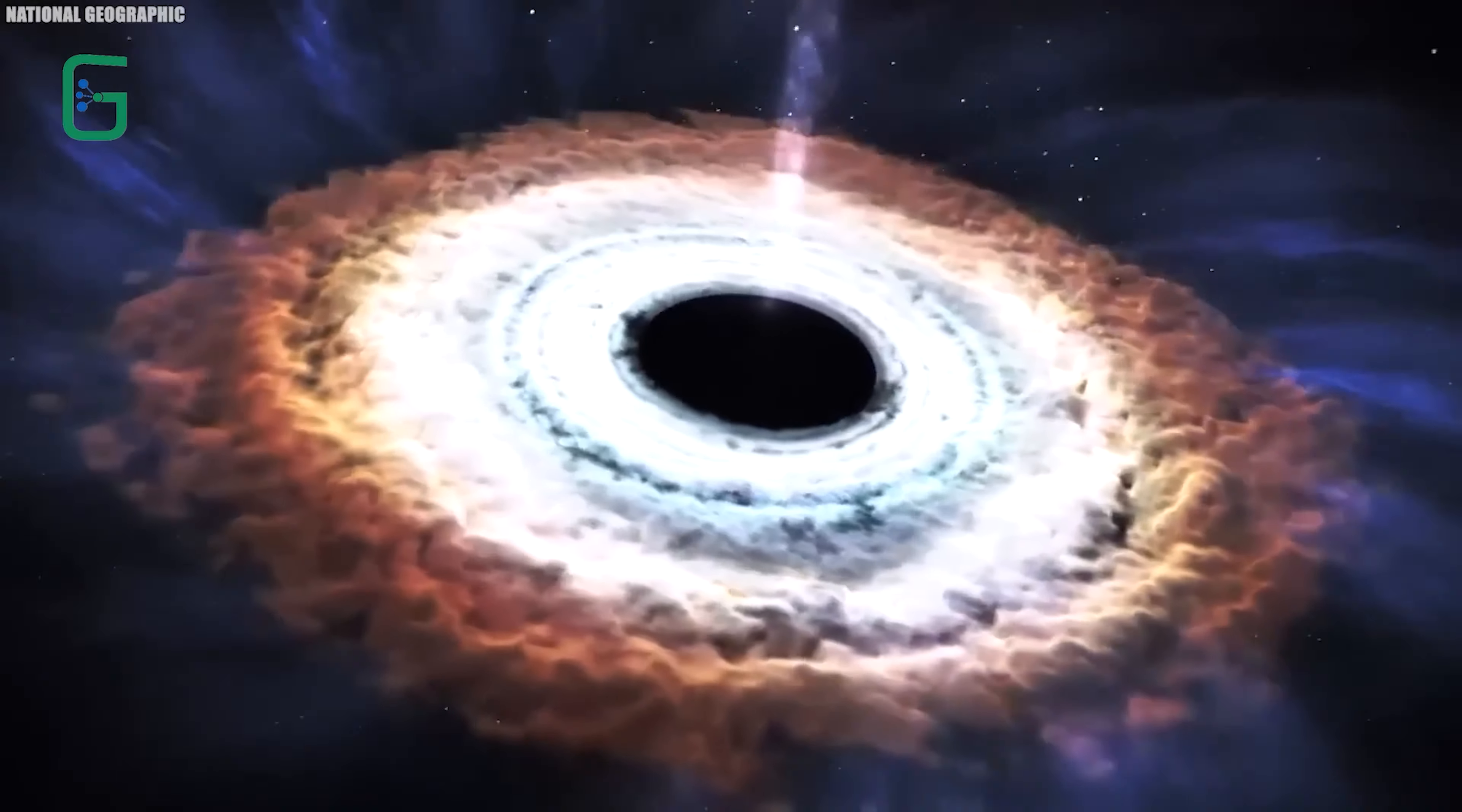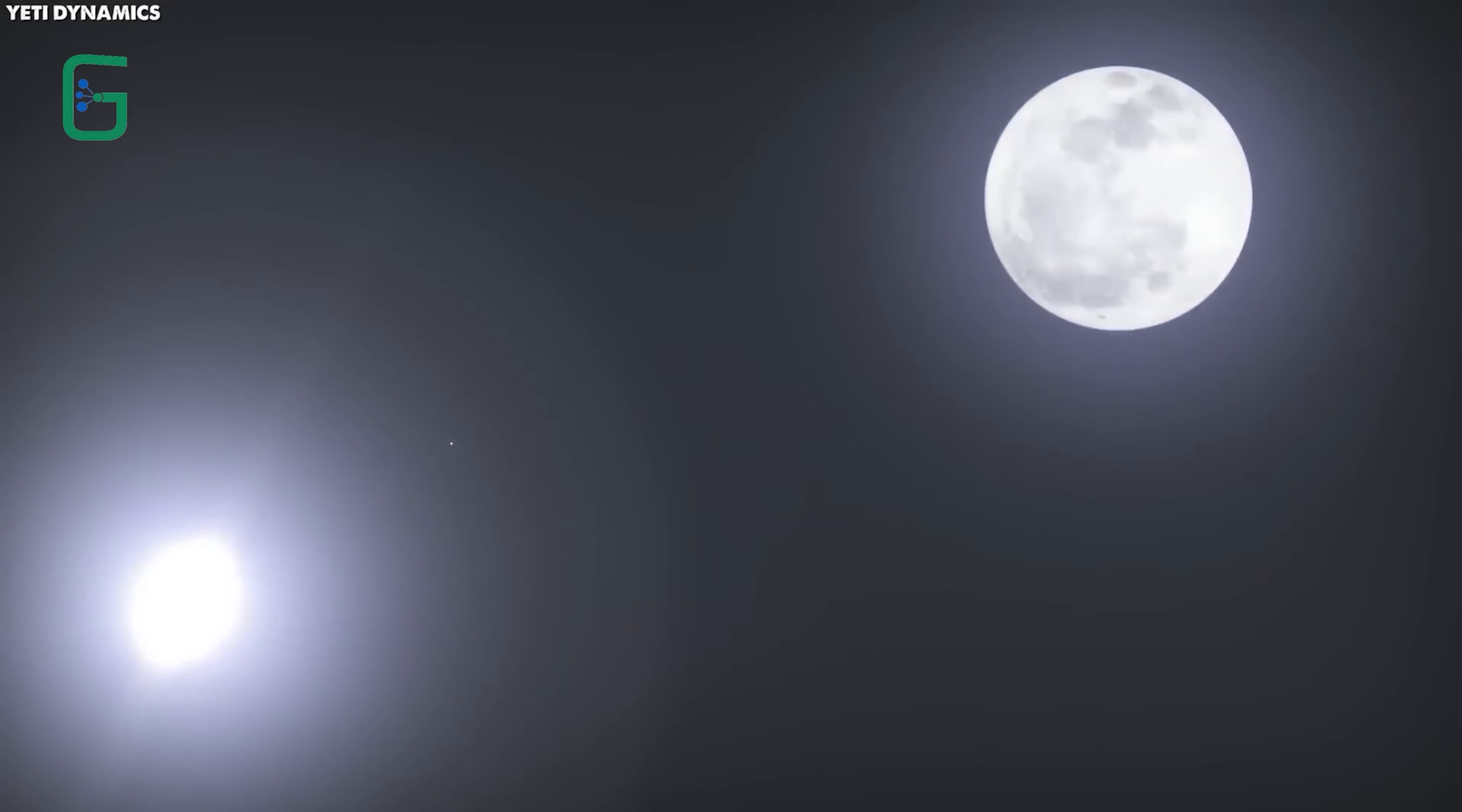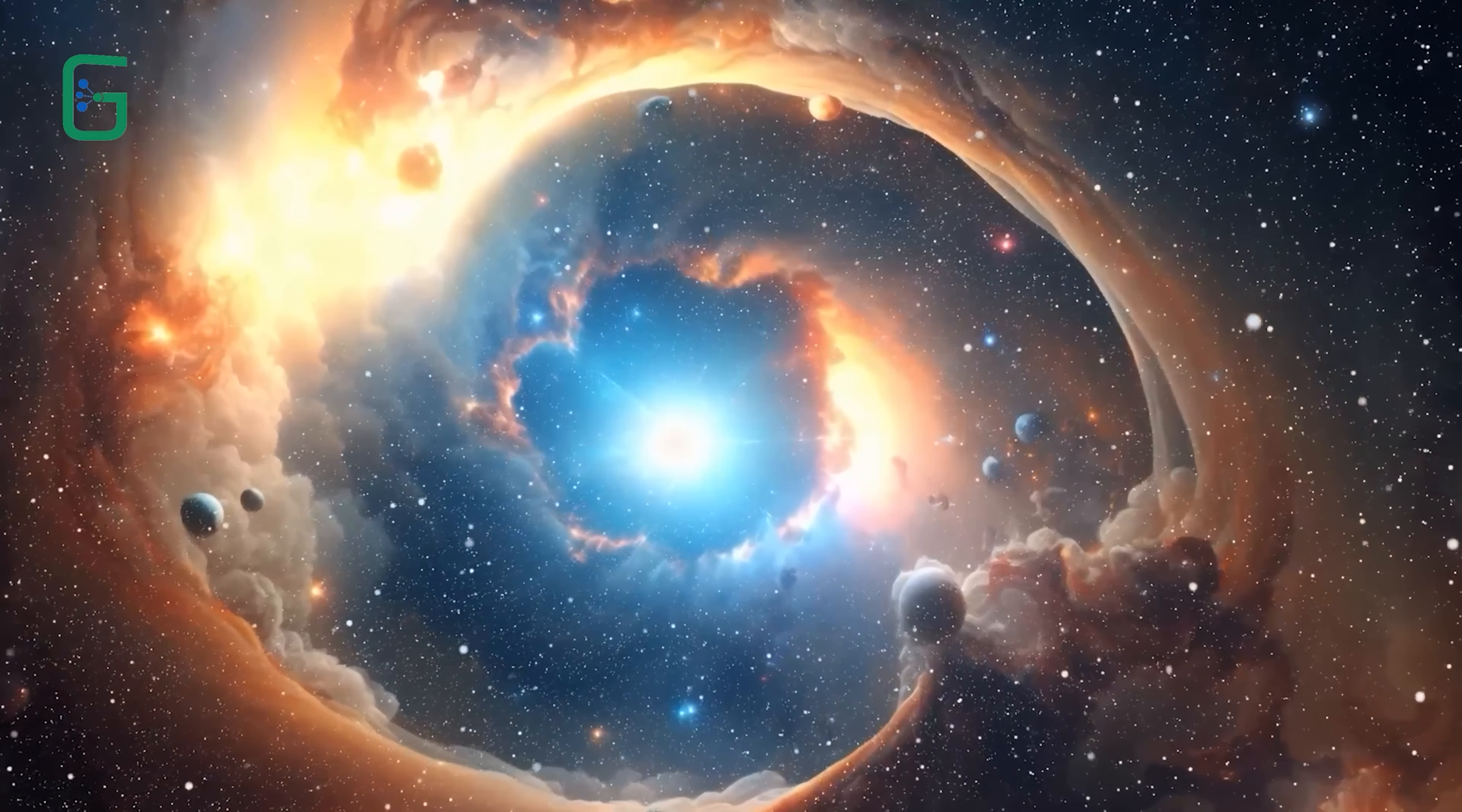Furthermore, Andromeda isn't alone in space. It's enveloped in a vast halo of stellar matter stretching hundreds of thousands of light years. This halo comprises stars, planetary nebulae, and globular clusters, offering a look into the galaxy's detailed history and formation process.